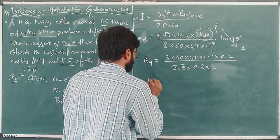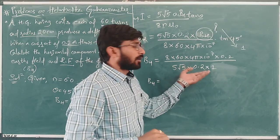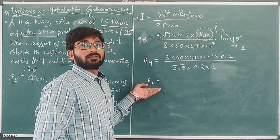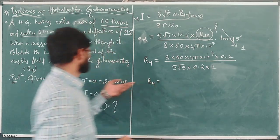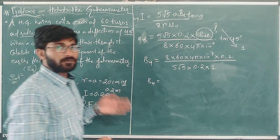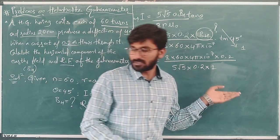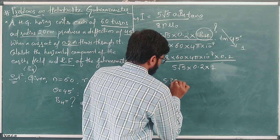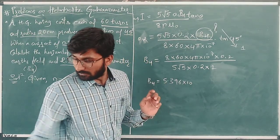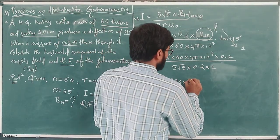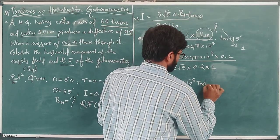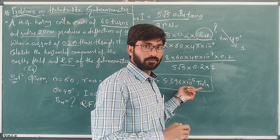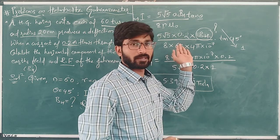After performing the numerical calculation with all substituted values, we get BH = 5.396 × 10⁻⁵ Tesla. This is the horizontal component of the Earth's magnetic field.